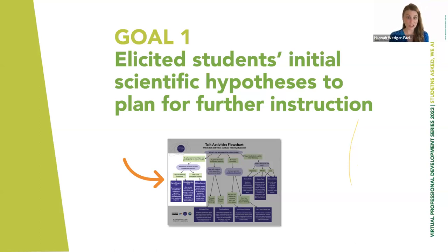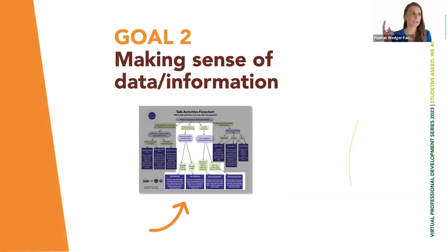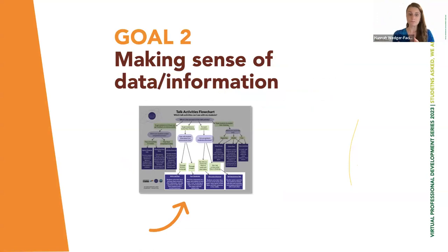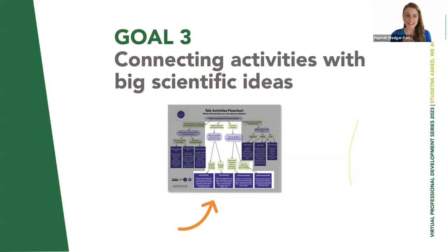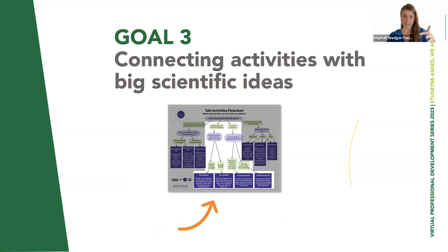Goal two is making sense of data and information. As you continue instruction, students will be presented with data and information to help them make sense of the phenomena — talking through new content allows students to understand it better. It also lets you see what learning goals students are meeting. The activities in the middle two columns help navigate the goal of making sense of new data and information. Goal three is connecting activities with big scientific ideas — students combine what they've learned through data, information, and conversations to expand understanding of the broader phenomena.